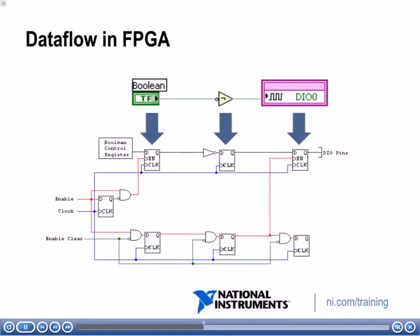Let's see how the enable chain affects this example. We have something reading a Boolean value from the host, a NOT function, and an output to a digital line. At the bottom, you can see the enable chain. That enable chain enforces data flow and ensures each of those items takes one clock cycle. So looking at that total block diagram, it's going to take at least three clock cycles.